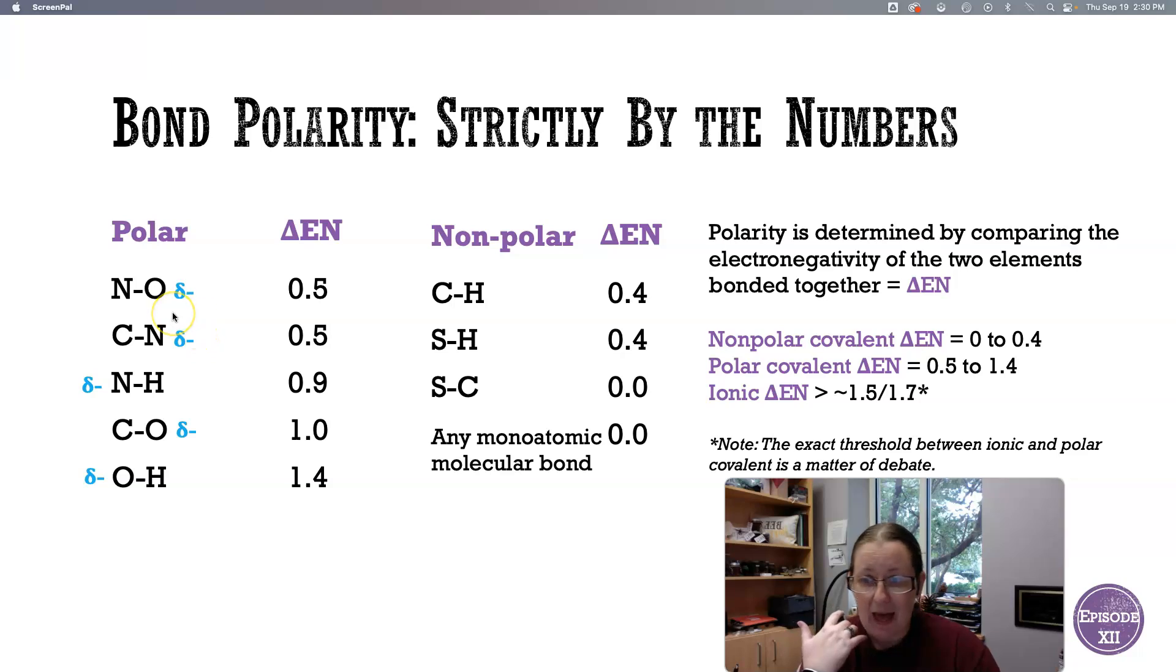Polar, anything involving oxygen is generally going to be polar. So nitrogen-oxygen, carbon-nitrogen, nitrogen-hydrogen, carbon-oxygen, oxygen-hydrogen, those are our common polar bonds.